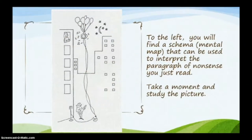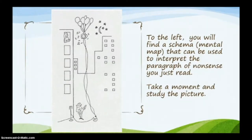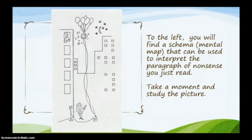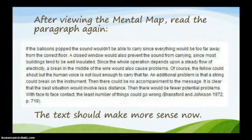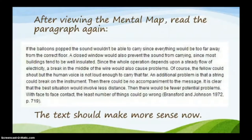But if I give you a schema for the passage, I guarantee it will be much easier to understand. To the left you'll find a schema or mental map that can be used to interpret the paragraph you just read. Take a moment and study the picture. After viewing the mental map or schema, read the paragraph again. The text should make more sense now. By giving you that image, it provided a mental map for you to actually digest, interpret, and learn what this passage meant.